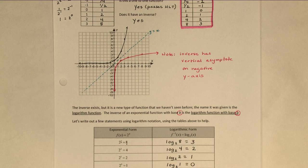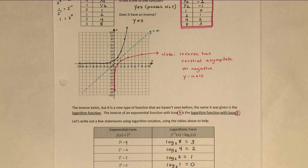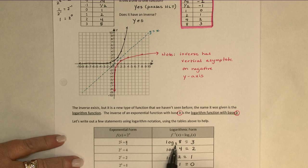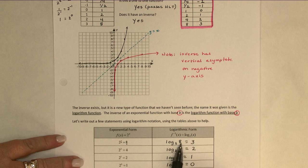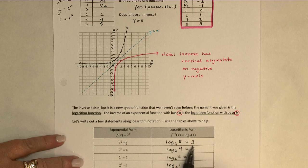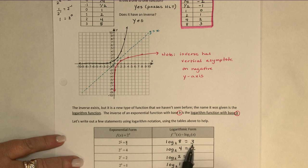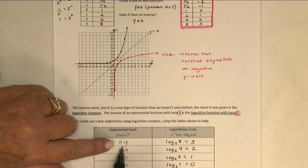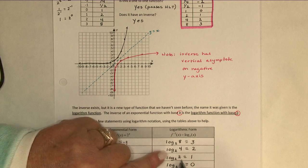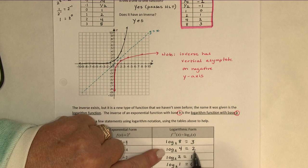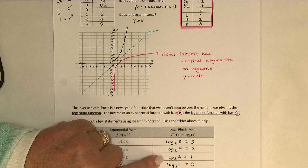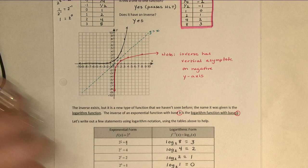We can certainly write them based on the tables of values, but what I'd like you to do is really see the relationship here between the statement of the function, the exponential function, and its inverse, the logarithm. Notice in the logarithm statement, we're given the base, 2, and it's almost like we're told the outcome is going to be 8. And what you have to tell me is what exponent would be necessary to go from a base of 2 to a result of 8. Well, I know 2 to the third power is 8. 2 to what power is 4? 2 to the second power. 2 to what power is 2? 2 to the first power. And finally, 2 to what power is 1? 2 to the zero power is 1.